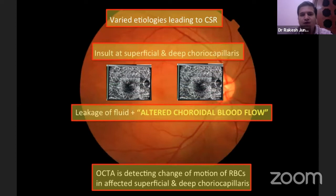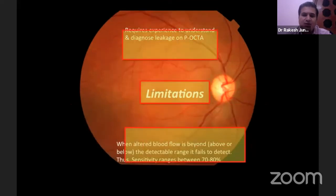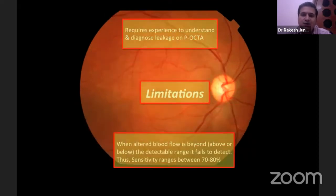We put forward a hypothesis: the various etiologies leading to CSR cause an insult at the choriocapillaries, which is already established. With the leakage of fluid, there is also choroidal blood flow that can be documented with OCT angio. However, you need to be lucky that the dysregulation of blood flow is occurring exactly at the time your scan is passing through, requiring some experience to diagnose the leakage on this new tool.